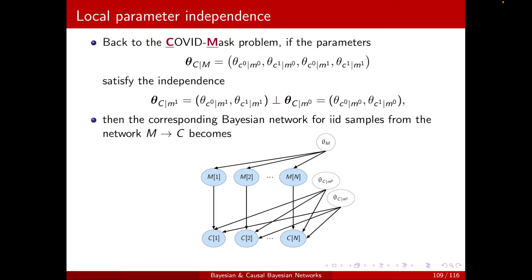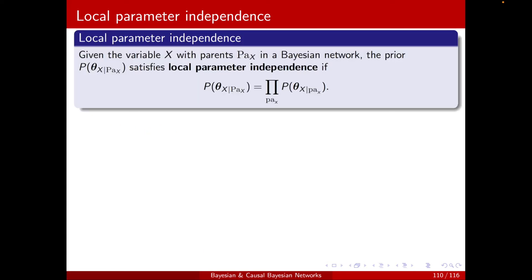Before making conclusions about the posterior, let's formalize this assumption. It implies that the probability of the compact form can be written as the product of the two separate probabilities by definition. In general, for a variable X in a Bayesian network, the prior satisfies local parameter independence if it can be decomposed into the multiplication of probabilities — the priors of the parameters corresponding to the CPD of X conditioned on each realization of its parents.